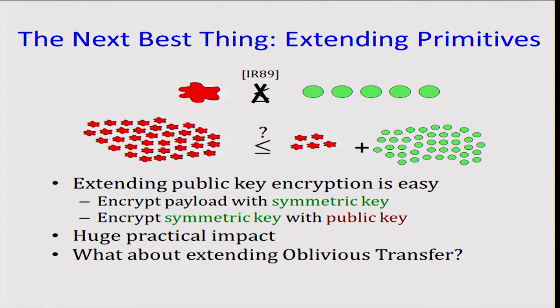Okay, we cannot do public key primitives from symmetric key primitives, but what is the next big thing? Maybe just with a few instances of public key primitives and a lot of symmetric key operations, we can generate many instances of public key operations. This is known as an extension of a primitive.